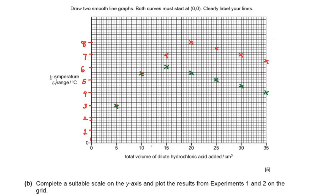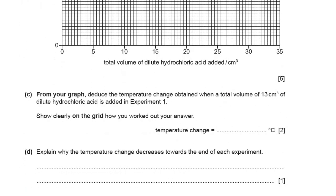Here are the two sets of points plotted for the two different experiments in two different colors. Note that the first two points are the same for both experiments. We are supposed to draw two smooth line graphs, both curves starting from 0,0. I'm drawing the curves on screen — you can try it more smoothly on paper. Label the curves separately: experiment 1 and experiment 2.